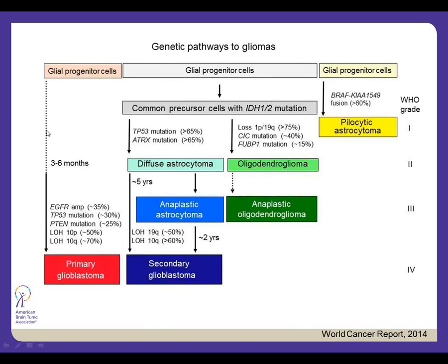The World Cancer Report includes a chapter on brain tumors summarizing all the genetics we've discussed — showing as you go from grade 1 to grade 4 tumors, all the different types of genomic changes that are known to occur. It's important to note the difference between primary glioblastoma and secondary glioblastoma — secondary means it started as a lower-grade glioma and over time transformed into a grade 4 tumor.